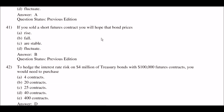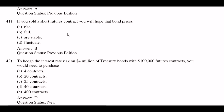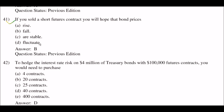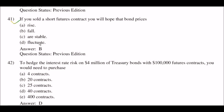Next question: if you sold a short futures contract, you will hope that bond prices — option A: rise; option B: fall; option C: are stable; option D: fluctuate. The right answer is option B: fall.